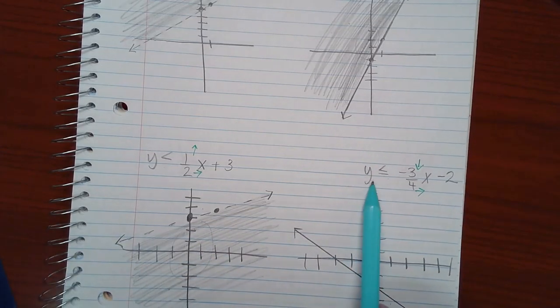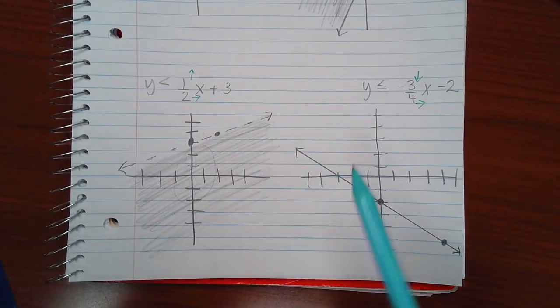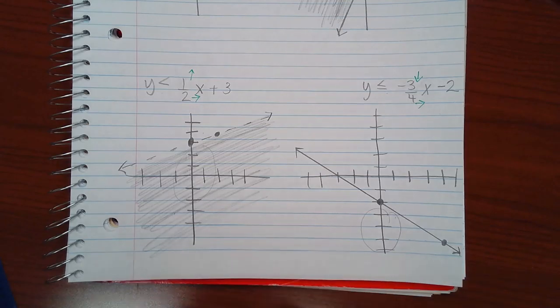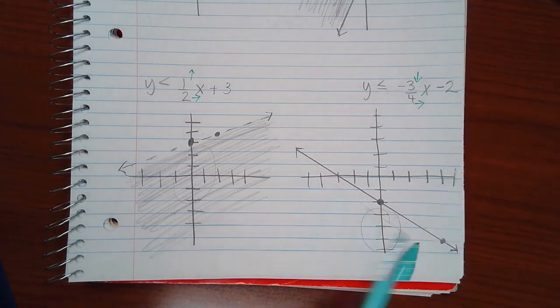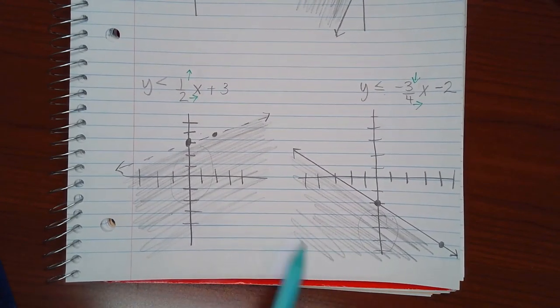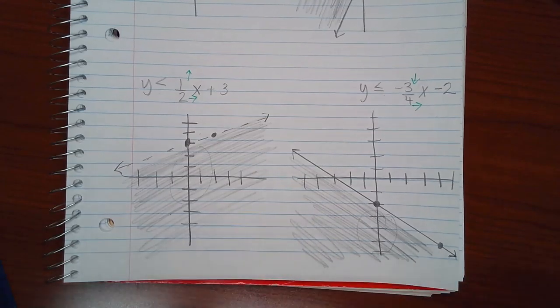Now these y values need to be less than the line. And on this graph, these are the y values that are below or less than the line. Which means I should be shading this side of the line.